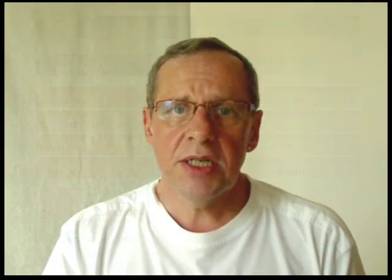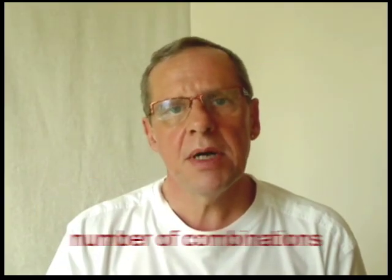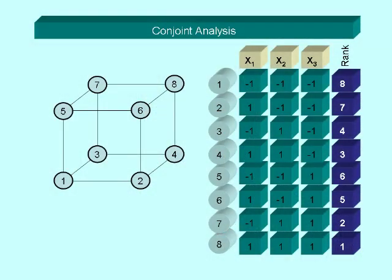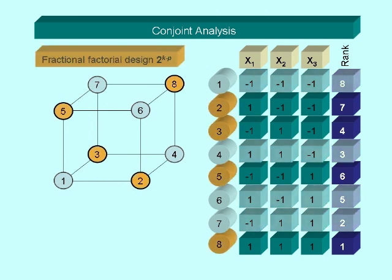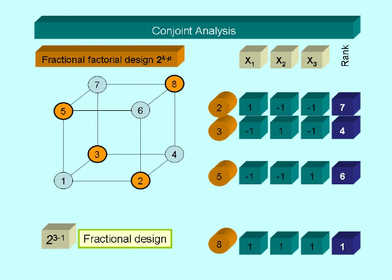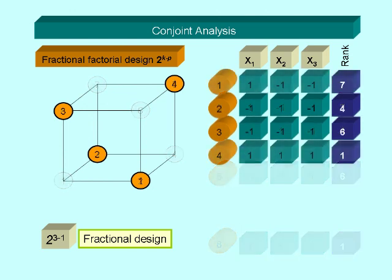So the question is, can we reduce the number of combinations to be ranked in a conjoint analysis? Yes, we can use a so-called fractional factorial design. Instead of all 8 combinations in our example, we select half. Fractional designs have a notation as shown here.